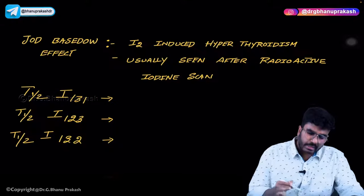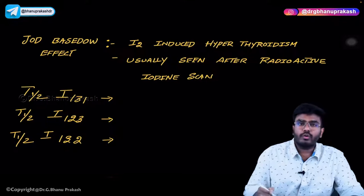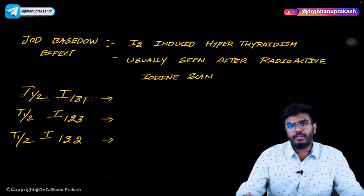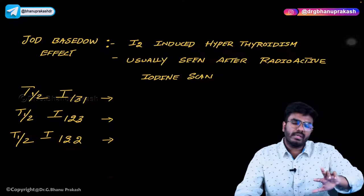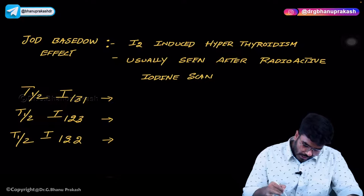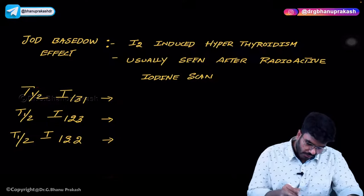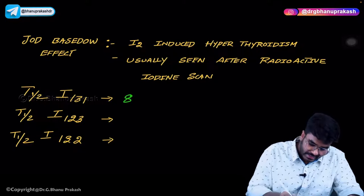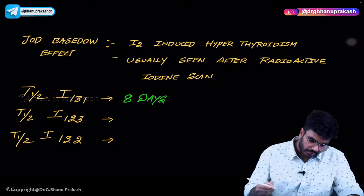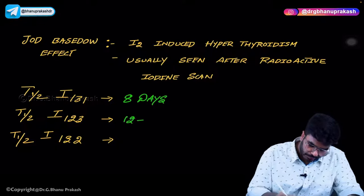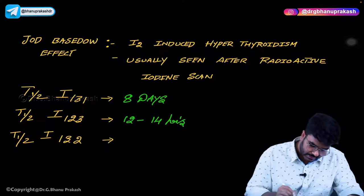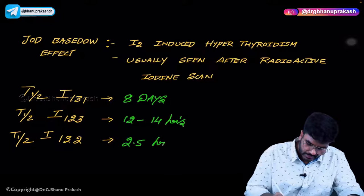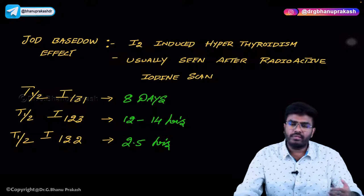Important half-lives of radioactive iodines: radioactive iodine-131 has a half-life of 8 days; radioactive iodine-123 has a half-life of 12 to 14 hours; radioactive iodine-132 has a half-life of 2.5 hours. These half-lives are very important exam questions. After radioactive iodine, if the patient develops hyperthyroidism, it is called Jod-Basedow effect.